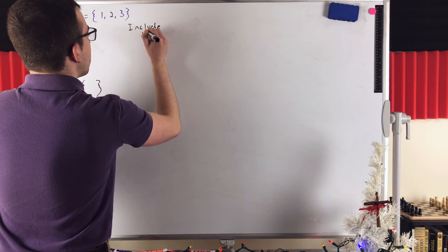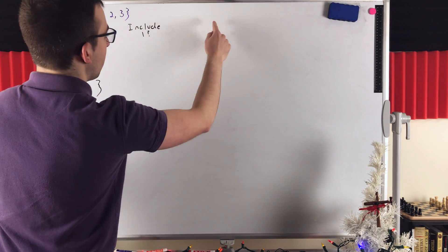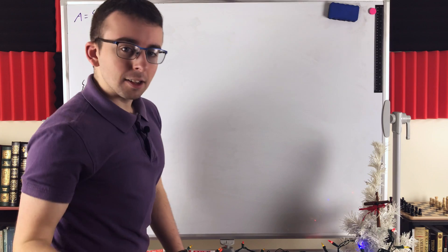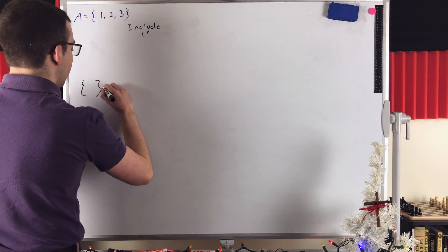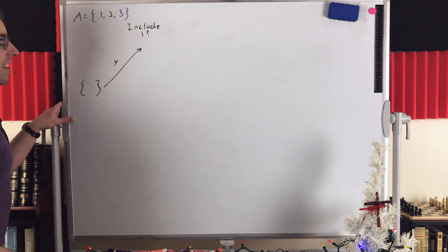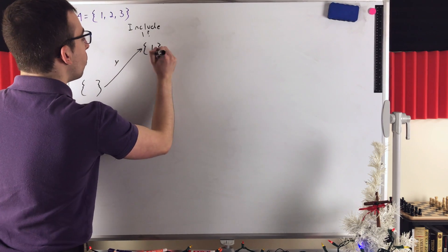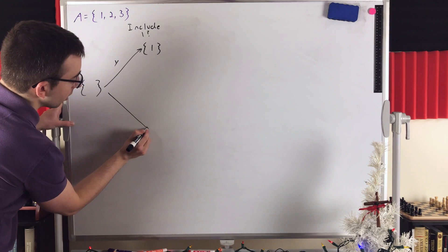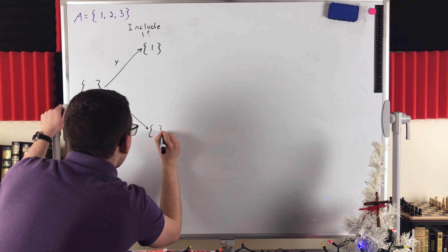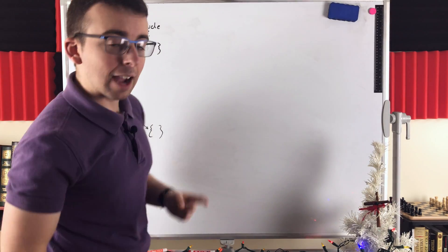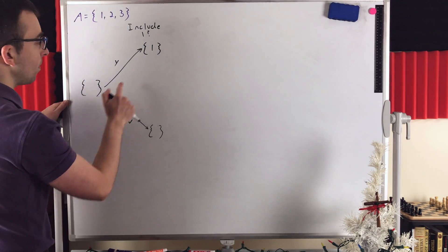The first question we ask is, will we include one or will we not include one? And the order that we address these elements in does not matter — we could go include two or don't include two, then ask about three, then ask about one. Doesn't matter. We'll end up with the same list of subsets regardless. So let's say yes, include one. That could be this arrow here — we'll put a Y there for yes, include one. Then we go from the empty set to the set containing one because we decided to include one. We could also say no, which we'll mark with an N on that arrow, which would mean we are still left with the empty set. After considering our first element, we've doubled the number of sets — we've gone from one to two.